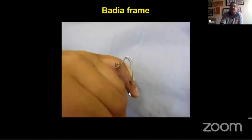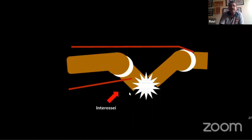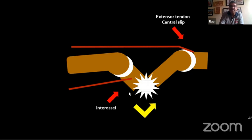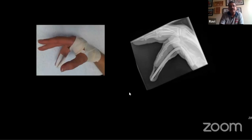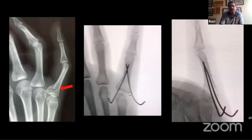When dealing with base of proximal phalanx extra-articular fractures, one must be aware of the deforming forces. The interossei pull the proximal fragment into flexion, while the extensor tendon pulls the distal fragment into extension, resulting in volar apex angulation. Treatment should be directed at neutralizing these deforming forces — either with a splint in the appropriate position or by cross-pinning with K-wires in any suitable configuration.